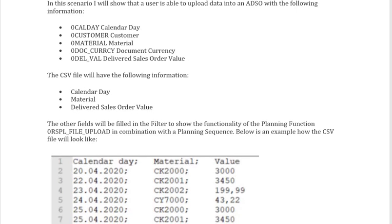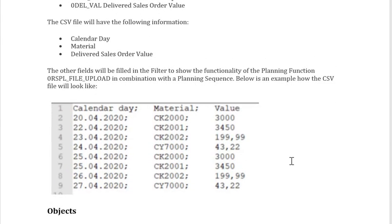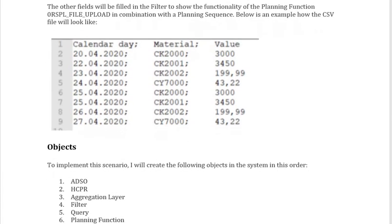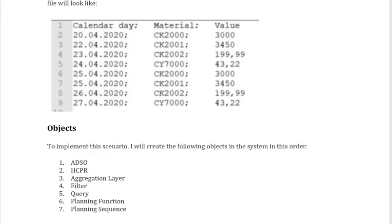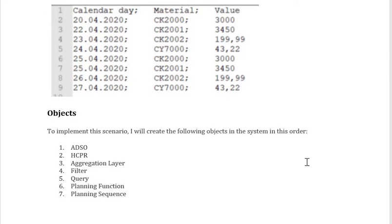Suppose you have a CSV file filled with these three values: Calendar Date, Material, and Value. Our objective is to load this data into the ADSO. To do that, we need to create the following: first the ADSO, then a composite provider, aggregation level, filter, query, planning function, and planning sequence.